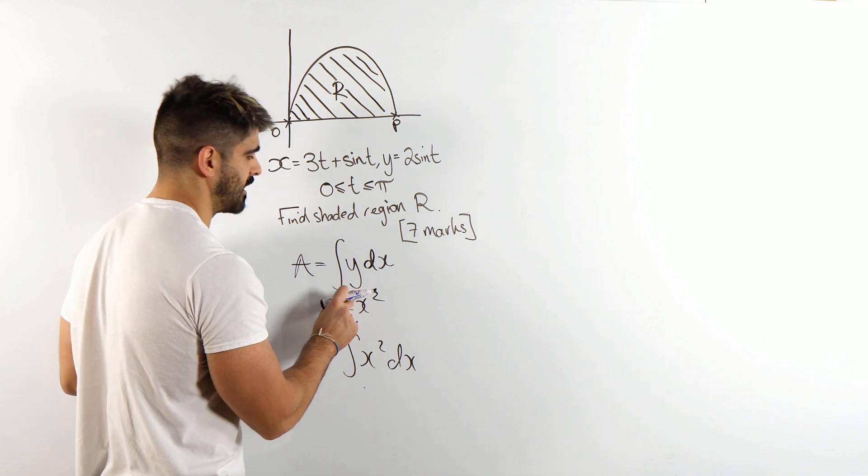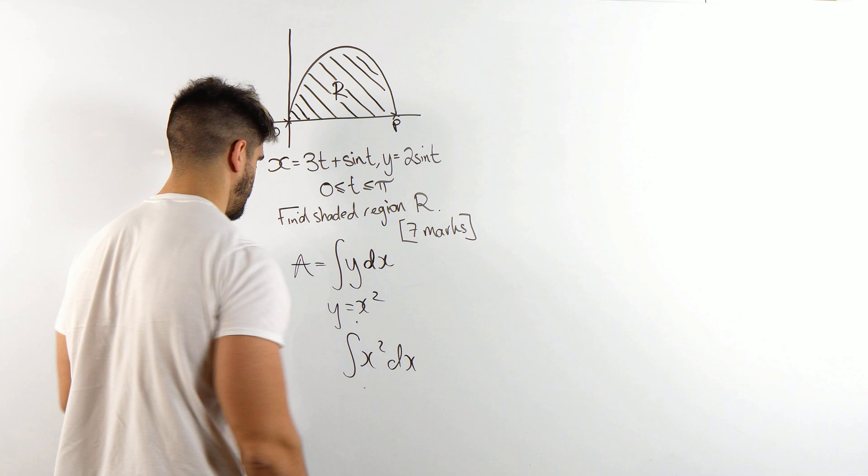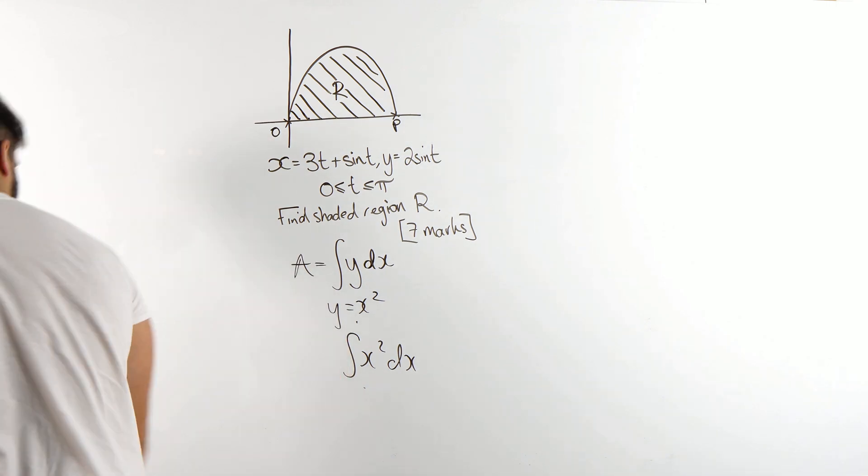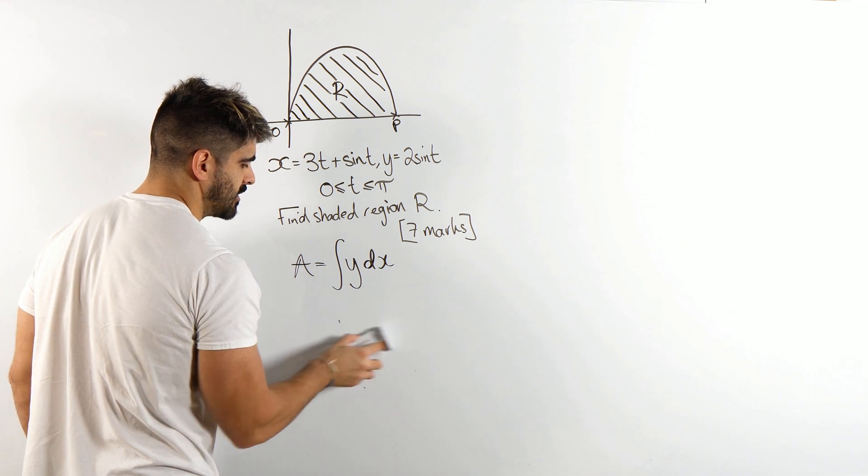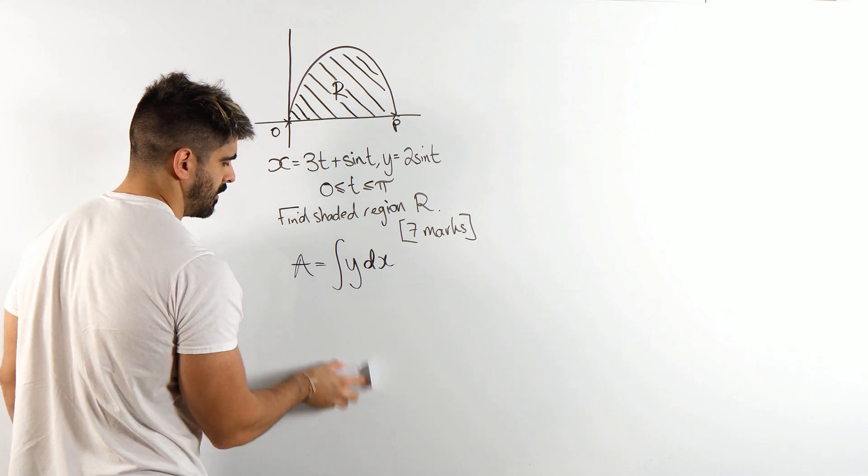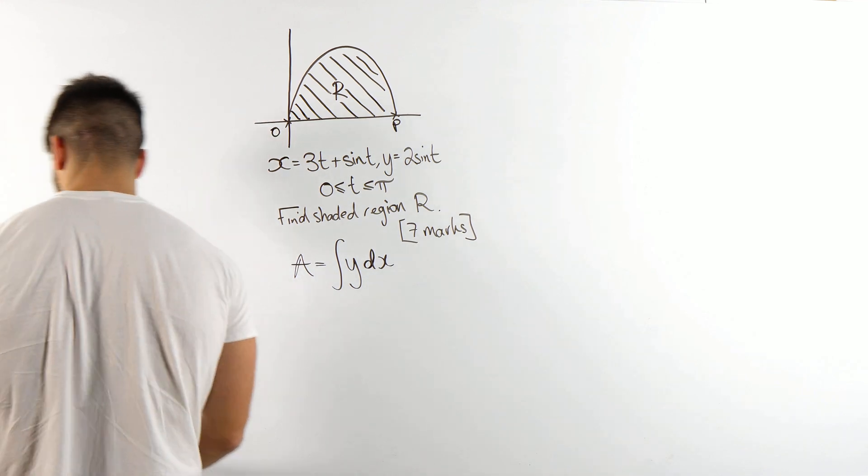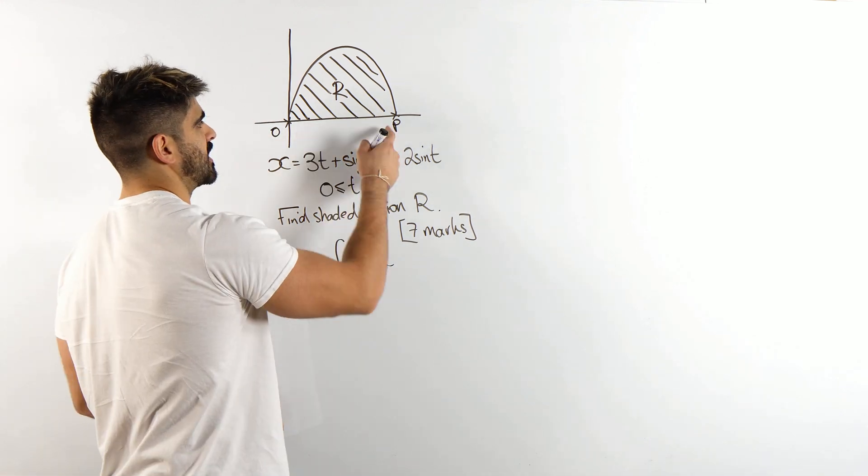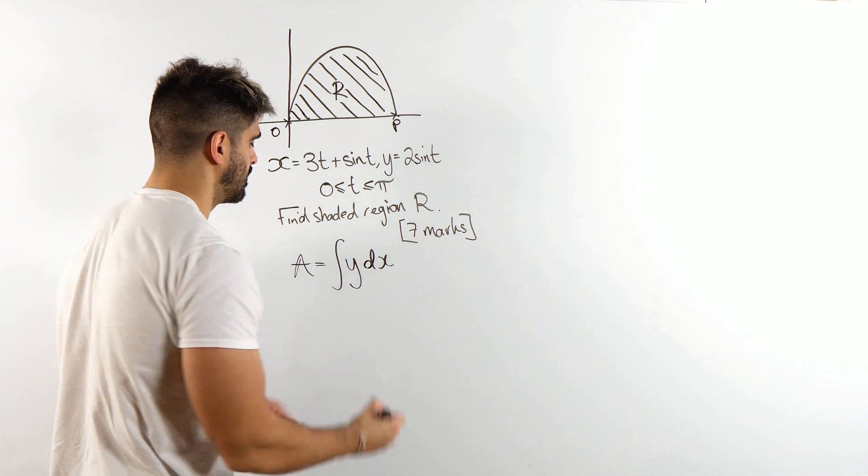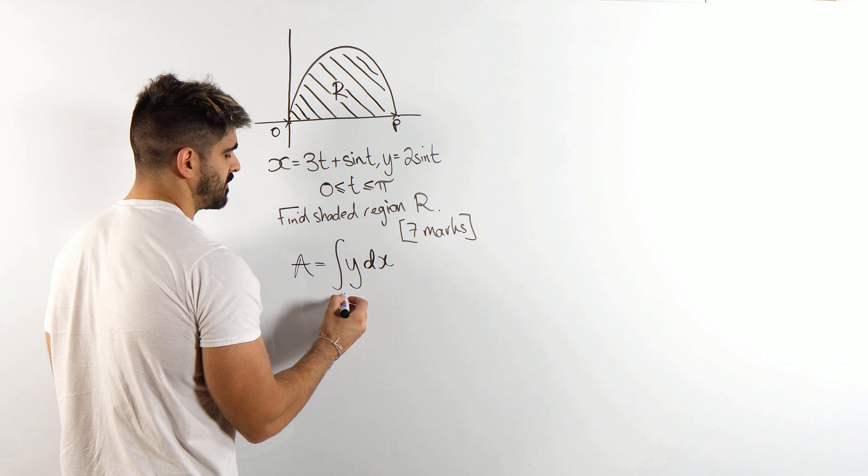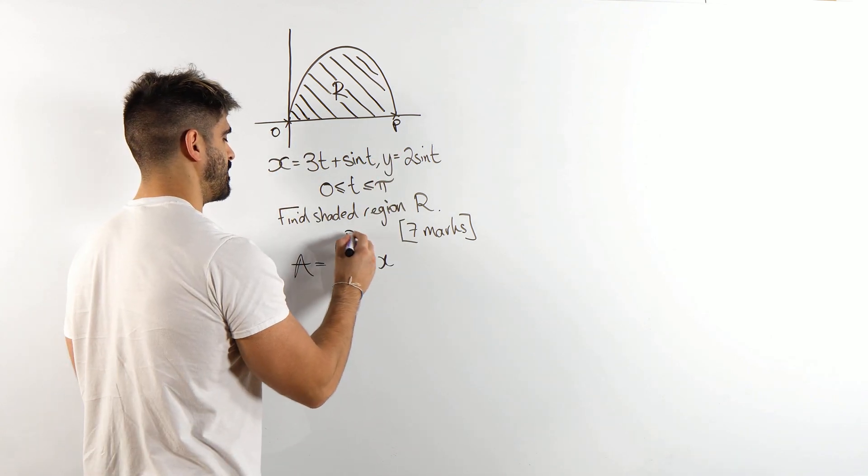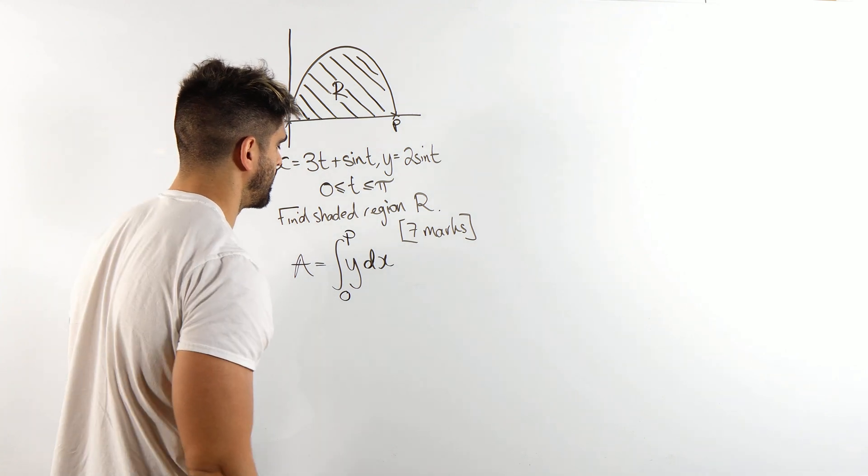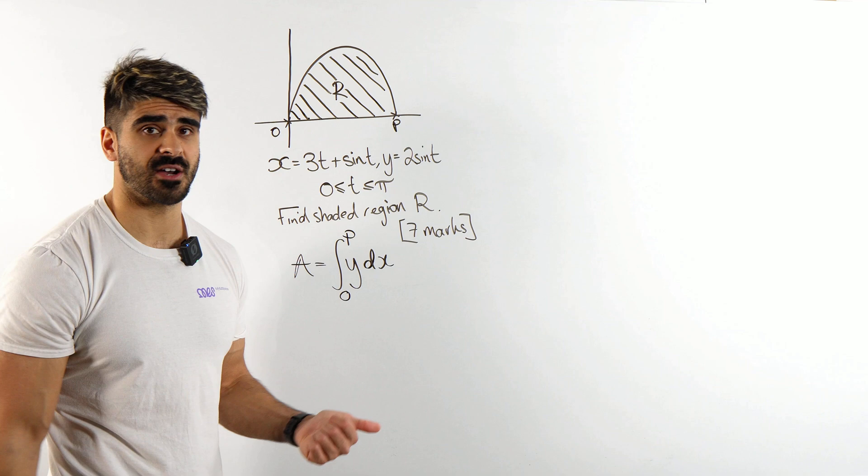So that's why we put y here with respect to x. Now, obviously here, our y's are in terms of t. And we also need to consider these limits. We're going between wherever the x value is at 0, which is obviously 0, and wherever the x value is at p, so we've got to figure those out.